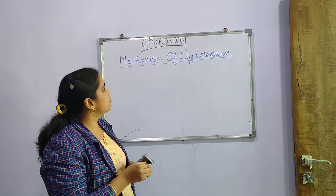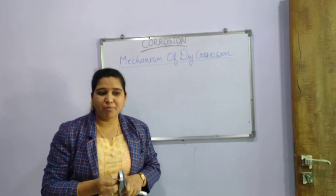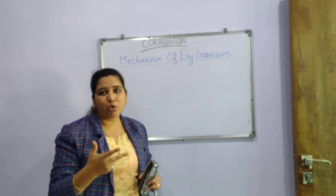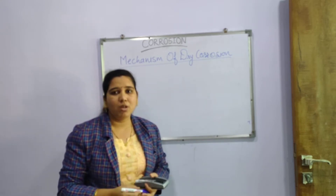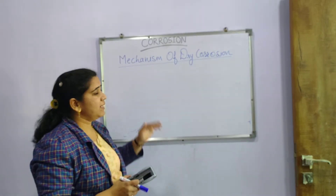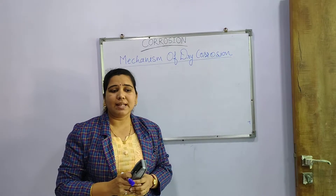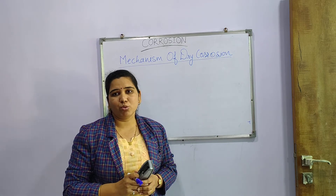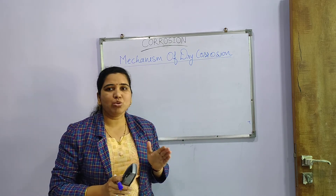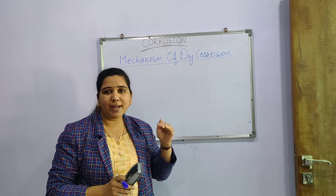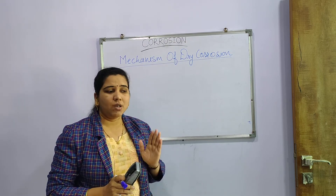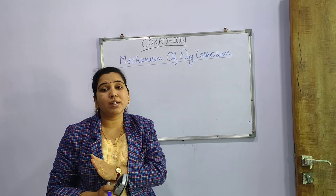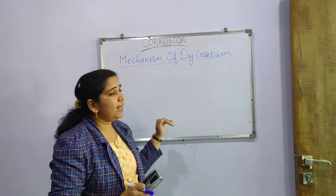Before this lecture, we have seen the introductory portion about corrosion. Now, after that, there is the mechanism of dry corrosion. We have seen the classification of corrosion, in which there are two types: dry corrosion and wet corrosion. In dry corrosion, again there are two types — dry corrosion due to oxygen and dry corrosion due to other gases than oxygen.